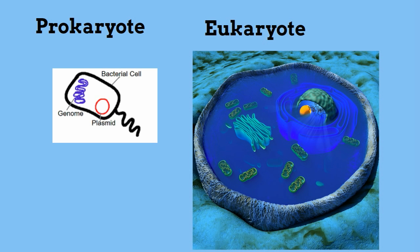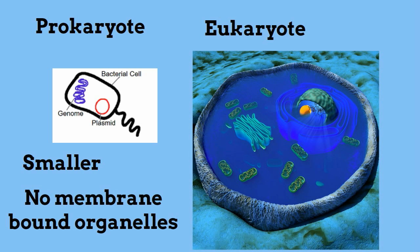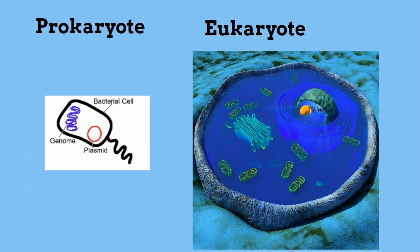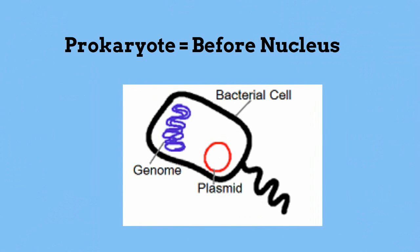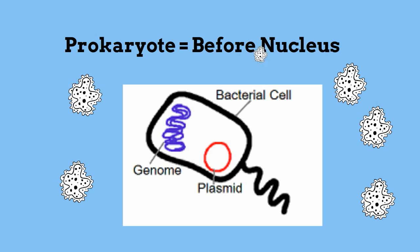If you were to look at prokaryotic and eukaryotic cells next to each other, you would notice that they are different and similar. Prokaryotic cells are much smaller. They do not have any membrane-bound organelles, but they do have a cell membrane, ribosomes, and DNA. They do not contain a nucleus. The DNA is found in the cytoplasm or in a circular form called a plasmid. In fact, prokaryote means 'before nucleus.'